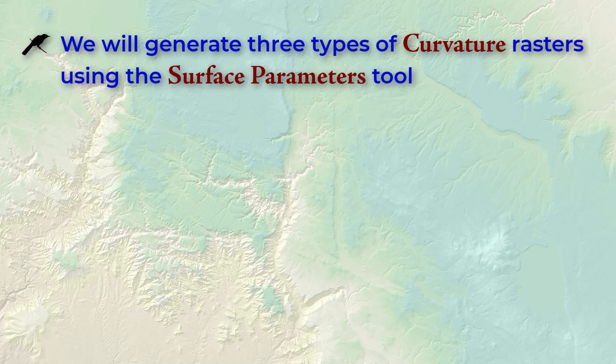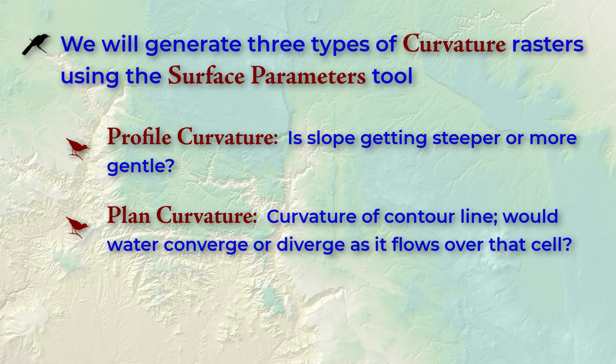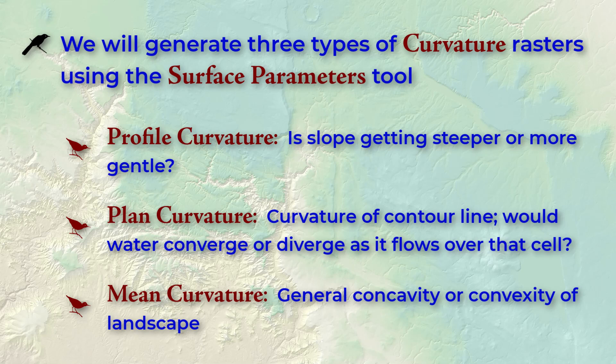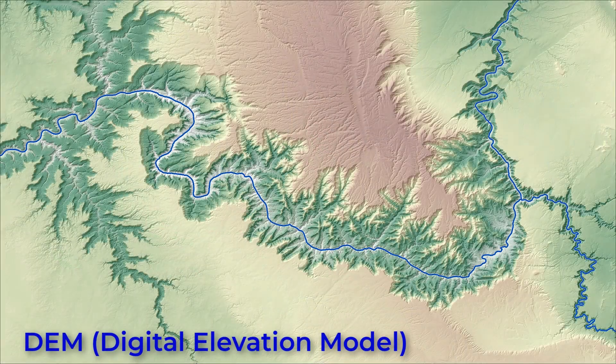In particular we're going to generate a profile curvature, which tells us whether water would speed up or slow down as it flows over a cell; plan curvature, which tells us whether water would be converging or diverging as it flows over a cell; and mean curvature, which tells us the general convexity or concavity of the landscape and could be a good predictor of exposure or protection of a cell. As with all topographic datasets, we generate curvature rasters from a DEM or digital elevation model.